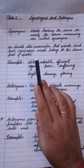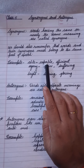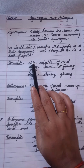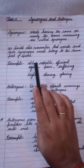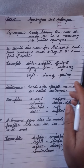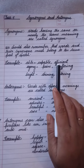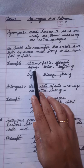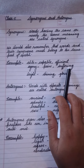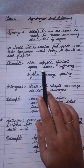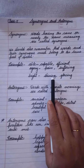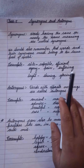For example: able, capable, efficient — both are adjectives describing quality. Agonist means pain, suffering. Bright, shining, glowing — these are all synonyms of each other.